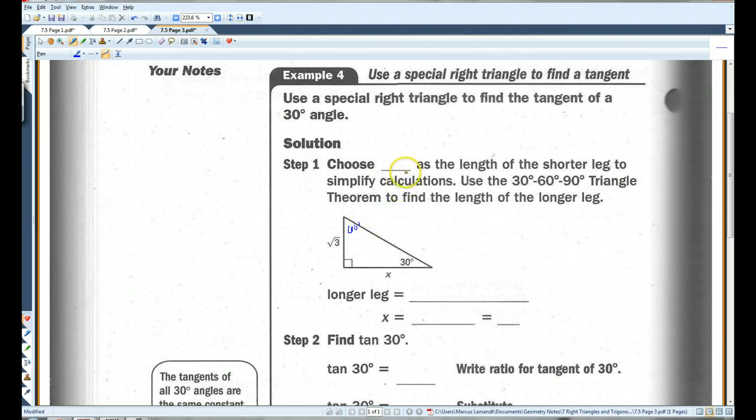the long leg is root 3 times the short leg. So, just to simplify things, I'm going to choose root 3 as the length of the shorter leg to simplify calculations.